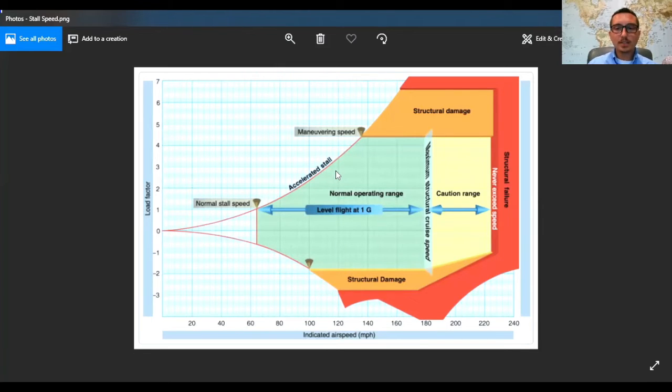Alright, so that's basically the big point that I wanted to get to you here is how to just understand that that's what this is saying: as you add load factor, whether that be from weight or a bank's turn, then you need to go faster to maintain your altitude. If you have any questions there, please leave them in the comments section.